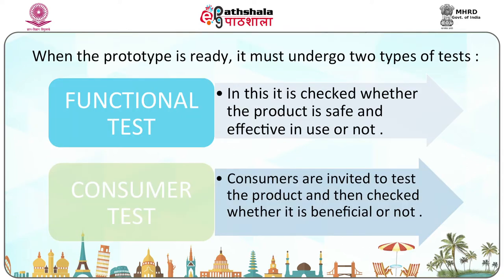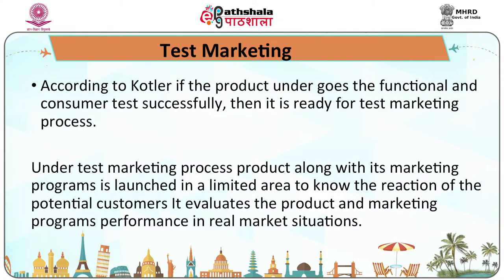When the prototype is ready, it must undergo two types of tests: a functional test, in which it is checked whether the product is safe and effective in use; and a consumer test, in which consumers are invited to test the product and check whether it is beneficial. The sixth step is test marketing. According to Kotler, if the product passes functional and consumer tests, then it is ready for the test marketing process, in which the product along with its marketing programs is launched in a limited area to know the reaction of potential customers and to evaluate the product's performance in real market situations.